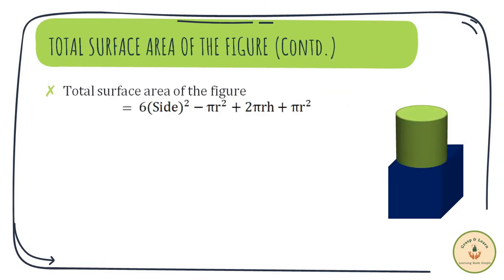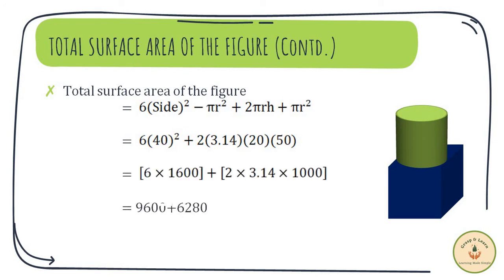The −πr² and +πr² terms cancel each other. Substituting the values, we get 6 × 40² + 2 × 3.14 × 20 × 50, where 6 × 40² is for the total surface area of the cube and 2πrh substitution is for the curved surface area of the cylinder. When we solve further, we get the total surface area of the figure as 15,880 cm².